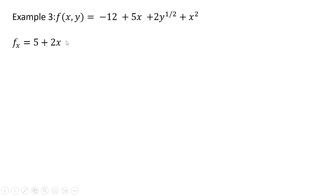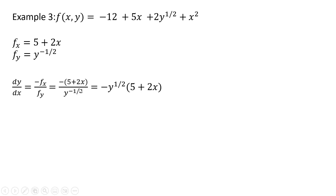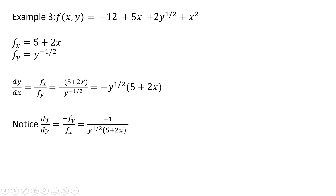Example 3 is another implicit function. Taking the derivative with respect to x first, we get 5 plus 2x. Taking the derivative with respect to y, we differentiate 2y to the one-half: the one-half comes down in front, so one-half times 2 is just 1, and we subtract 1 from the exponent, leaving minus one-half. Following the implicit function rule, we get the following result, and we can move the y to the minus one-half up into the numerator following the rules of exponents. The derivative of x with respect to y is the reciprocal of that answer.